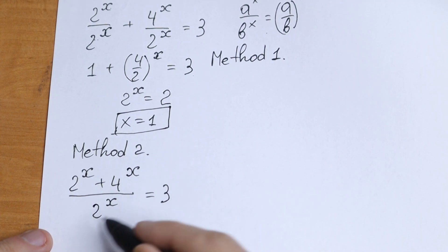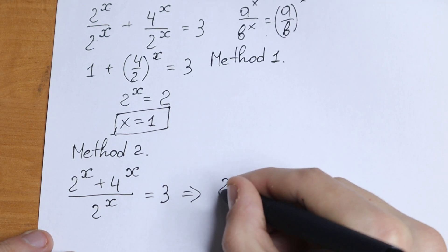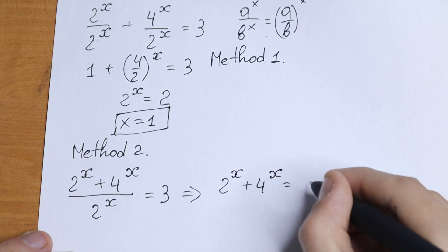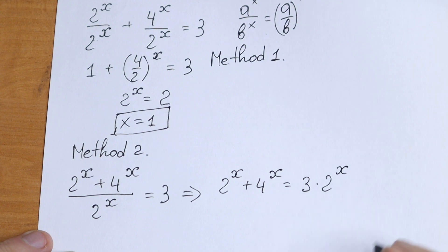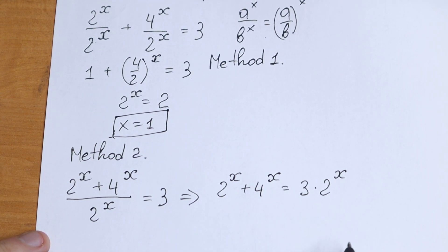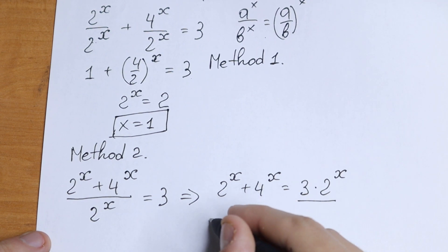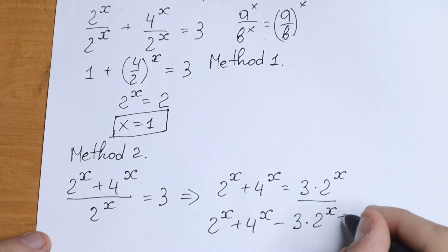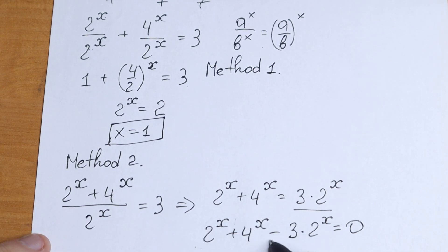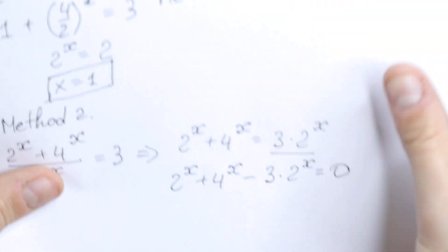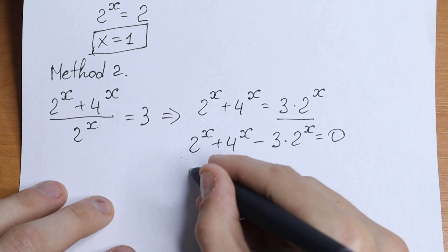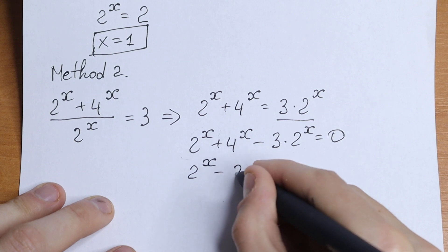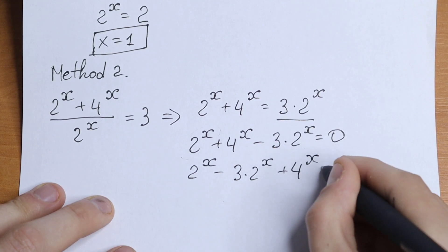If we multiply both sides by 2 to the power x, we get: 2 to the power x plus 4 to the power x equals 3 times 2 to the power x. Now let's bring all terms to the left: 2 to the power x plus 4 to the power x minus 3 times 2 to the power x equals 0. We have 2 to the power x minus 3 times 2 to the power x, which is like x minus 3x.